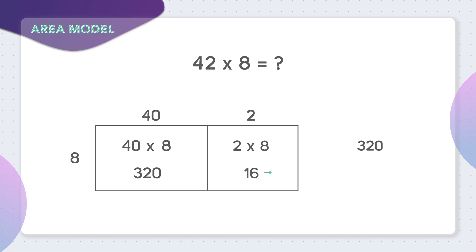Now you add 320 plus 16. Well, 0 plus 6 is 6. 2 plus 1 is 3. And 3 plus nothing is 3. So 42 times 8 is 336.